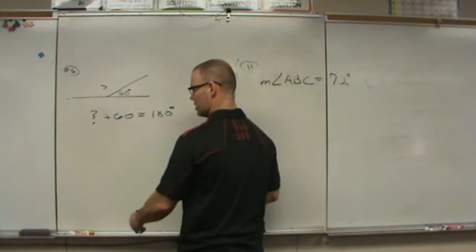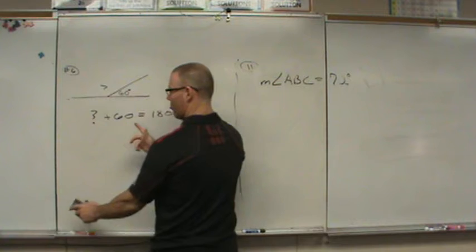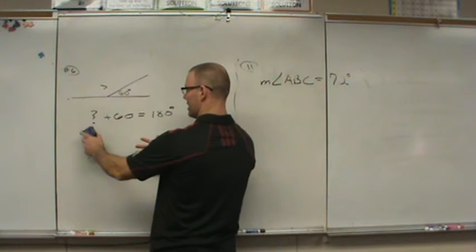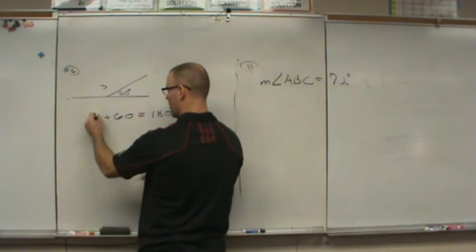The disconnect that I see a lot of times in geometry versus like algebra is algebra will give you this problem and say solve. Geometry doesn't give you the problem. They give you a diagram, you have to create the problem and solve. Well, you saw how easy it was to create this problem. In math, however, we don't use question marks or exclamation points or things like that to represent an unknown. We use a letter.